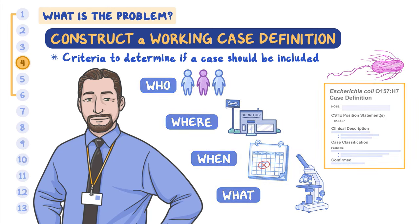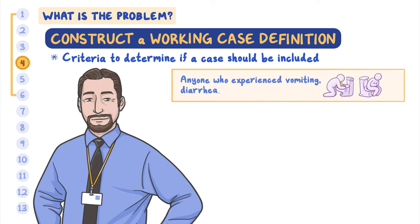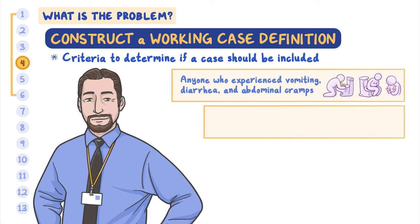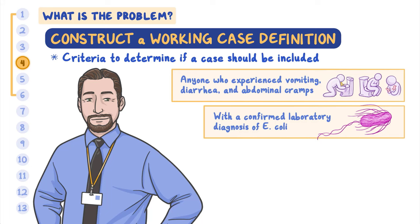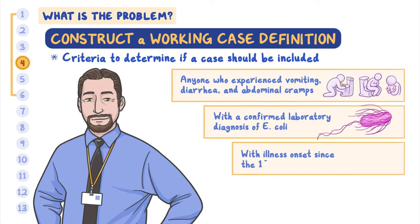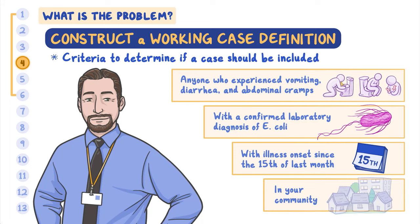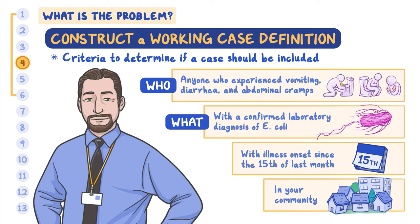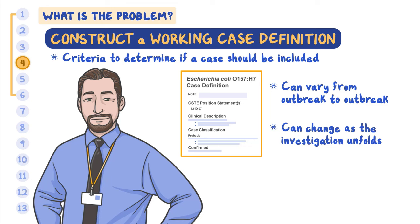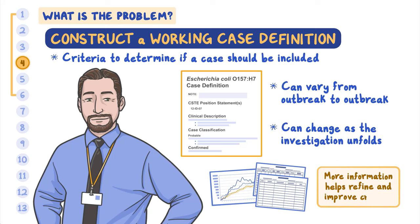In this outbreak, the case definition is anyone who experienced vomiting, diarrhea, and abdominal cramps with a confirmed laboratory diagnosis of E. coli, with illness onset since the 15th day of last month in your community. Anyone is the who. The symptoms and confirmed laboratory test is the what, since the 15th of last month is the when, and your community is the where. Case definitions can vary from outbreak to outbreak and can change as the investigation unfolds. More information helps public health experts refine and improve the criteria as they learn more.